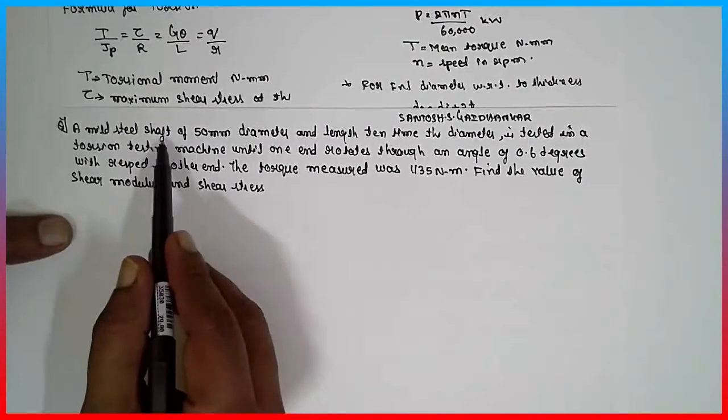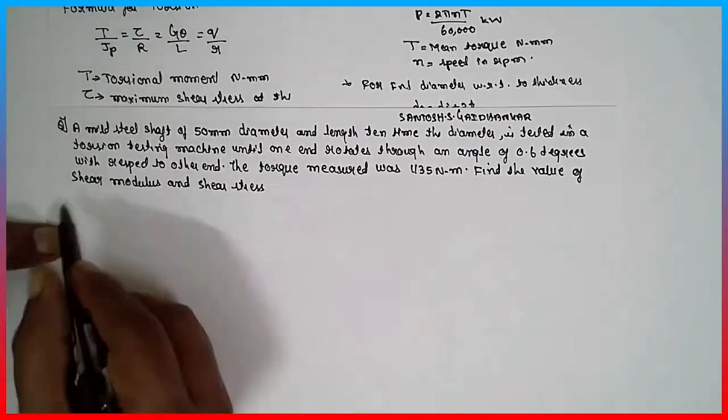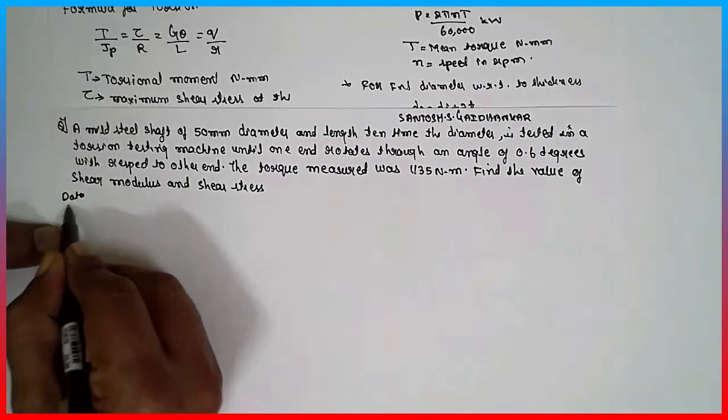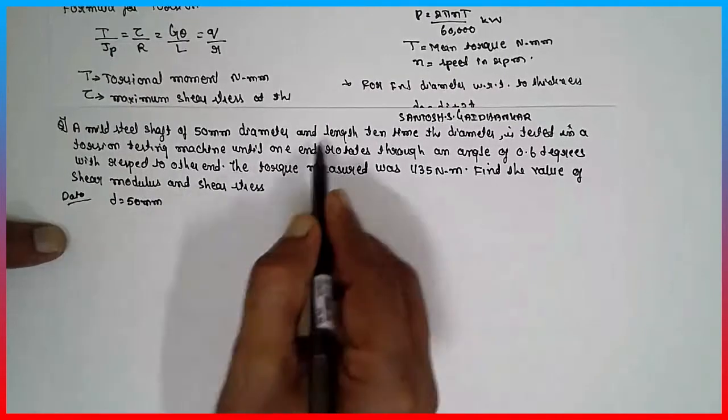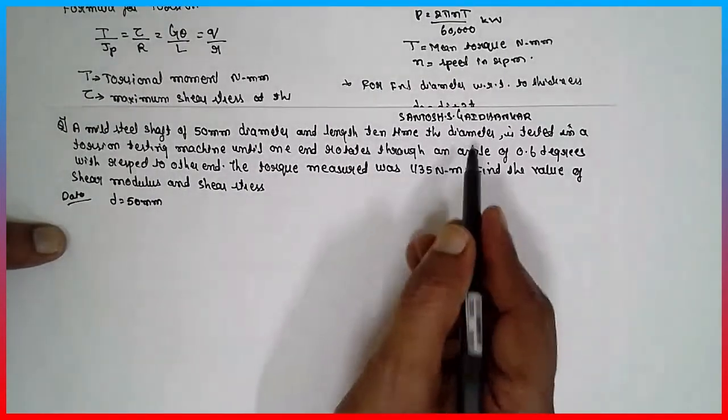A mild steel shaft 50 mm diameter. Shaft is given 50 mm diameter. D is equal to 50 mm. And length is 10 times the diameter.